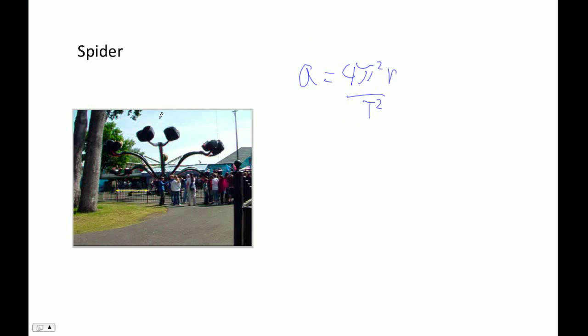Where this is the radius as measured like here, that's our r. t is the time for the thing to go around once.